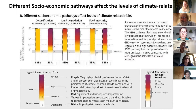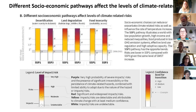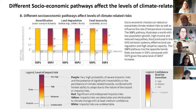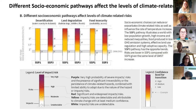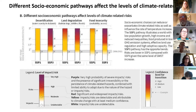For a given temperature change, the type of development pathway matters. SSP1 is a more sustainable world with good economic growth, low population, and international cooperation. SSP3 is a very divergent world where nations don't cooperate and focus on national security. For desertification, land degradation, and food insecurity, if we follow a sustainable development pathway, the effects of temperature change are less severe than on an unsustainable pathway.